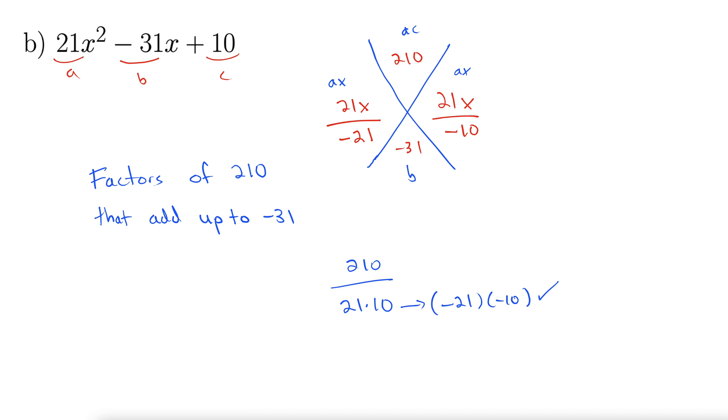Next, we simplify these as best we can. So it looks like here we can cancel the 21s. So this gives x over negative 1 down here. Here we can't cancel anything. So we still have 21x over negative 10. And then you read these factors from the top down. So we'll read it as x minus 1 times 21x minus 10.